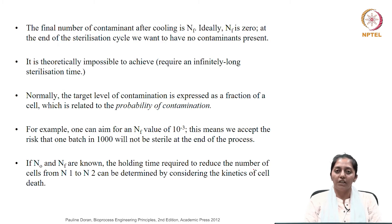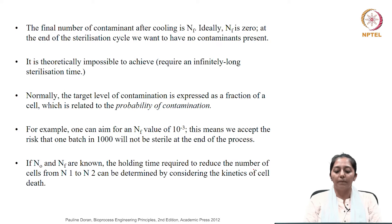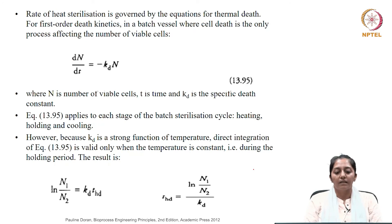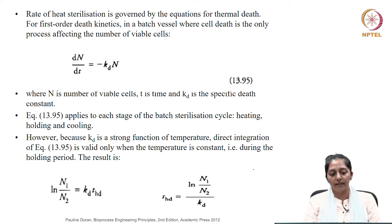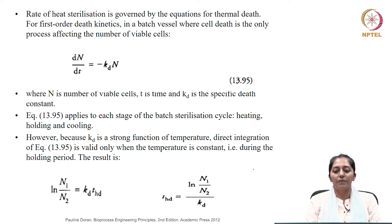If N0 is the initial number of cells and N_F is the final number of cells which we desire, the holding time period required to reduce the number of cells between them can be determined by considering the kinetics of cell death. We characterized the thermal death kinetics of the organisms. The rate of heat sterilization is governed by equations for thermal death, which is defined as first-order death kinetics in a batch vessel.